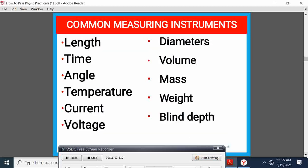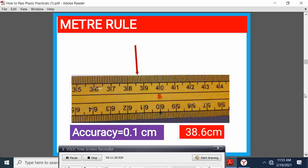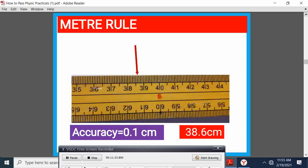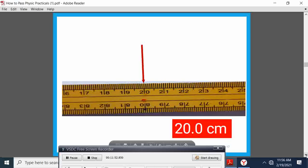The common measuring instrument or quantities we obtain is length, time, angle, temperature, current, voltage, liquid depth, weight, mass, volume, and sometimes diameters. For instance, the common tool we use is a meter rule. The accuracy of a meter rule is to one decimal, 0.1 centimeters. For example, in this meter rule, it is 36.6 centimeters. You cannot give two decimals. It is one decimal place accuracy. This is 20.0 centimeters, not 20 centimeters. So we must state the accuracy in our practice. Remember, this is not a theory paper. It is a practical paper.